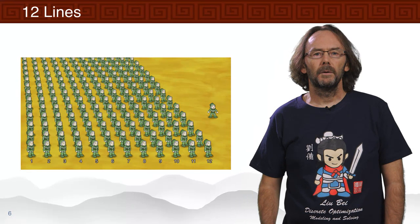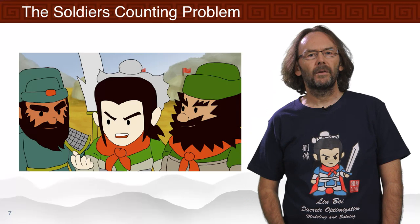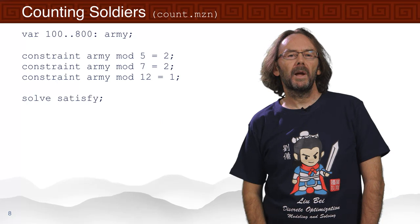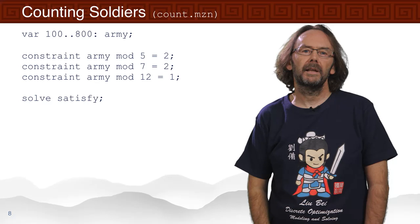We can do some maths and we'll show you how to do it later on. But why do maths when you can just have it answered for you directly? Let's build a MiniZinc model to do it. We can see that we have an army. How many people do we have in our army? Well, it's somewhere between 100 and 800.